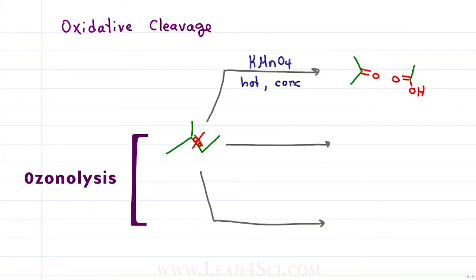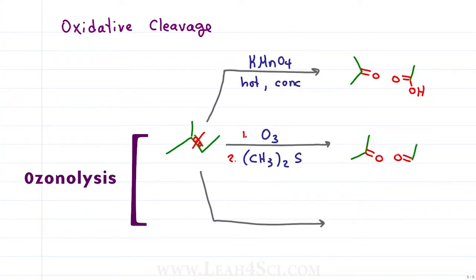We have two types of ozonolysis reactions. Under reductive conditions using O3 followed by DMS (or (CH3)2S), the secondary carbon gives us a ketone but the primary carbon gives us an aldehyde rather than a carboxylic acid. Under oxidative conditions using O3 followed by peroxide, we get a similar product to KMnO4 — secondary gives a ketone and primary gives a carboxylic acid.